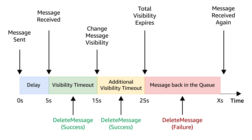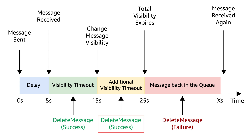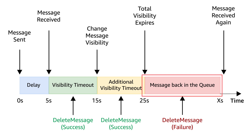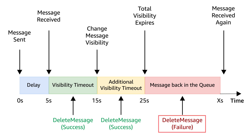Now let's assume that the consumer can't process this message, so the visibility timeout is increased by another 10 seconds, that is until the 25-second mark. The consumer then has until this additional time to call the delete message API successfully with the same receipt handle. If the consumer couldn't successfully process the message by the 25-second mark, the message becomes available in the queue, no matter the state of the consumer. In this case, if the consumer calls the delete message API with the expired receipt handle, the request will fail with an 'invalid parameter value' error.